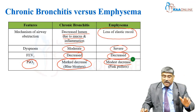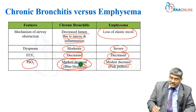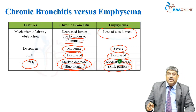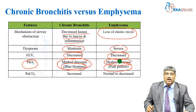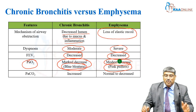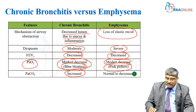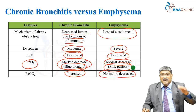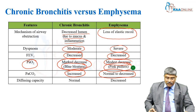Chronic bronchitis patients are always called blue bloaters and emphysema patients are called pink puffers. Coming to PaCO2, it is increased in chronic bronchitis, but because the emphysema patient is dyspneic and hyperventilating, the PaCO2 is going to be low.